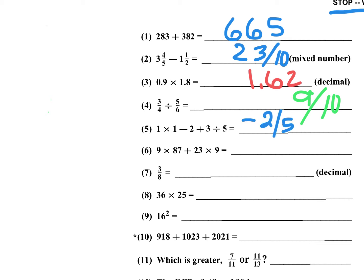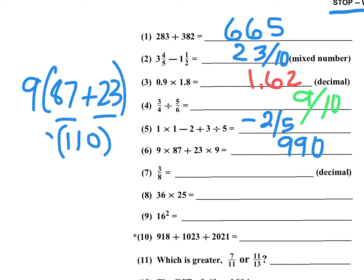Number 6, 9 times 87 plus 23 times 9. If I factor out a 9, I'm going to have 87 plus 23, which is 110. 110 times 9 is 990. What I'm doing is I'm factoring out a 9, and I have 87 plus 23, which is 110, and then I multiply that by 9, and you get 990.